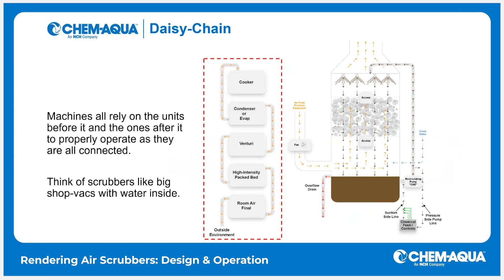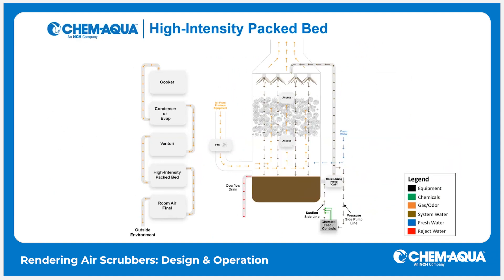It's a good rule of thumb to think of these scrubbers like real big shotbacks — there's air being drawn in on one side, pushed out the other side, and water inside. We're going to specifically focus on high intensity pack beds today because this is one of the more common ones we see in rendering. Room air scrubbers also operate very similarly to a high intensity pack bed.